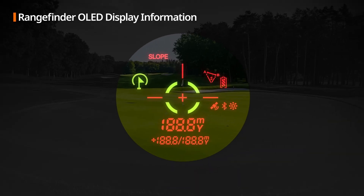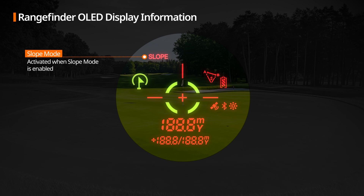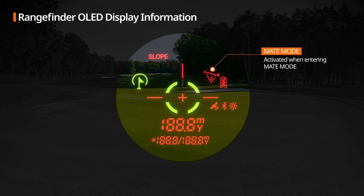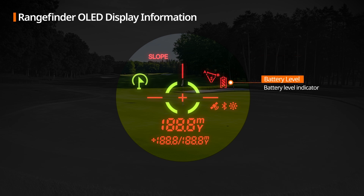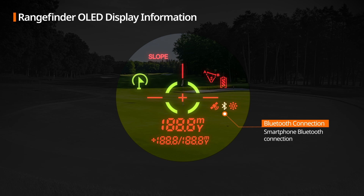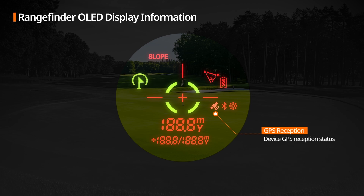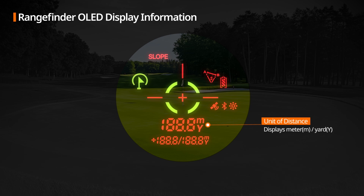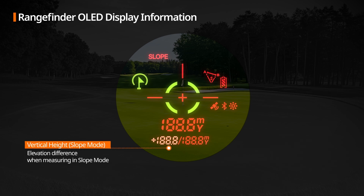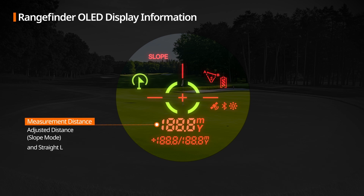Rangefinder OLED Display Information: Pin Catcher — activated when using Pin Catcher measurement. Slope Mode — activated when Slope Mode is enabled. Aiming Line — the line used to aim at the target during measurement. Matte Mode — activated when entering Matte Mode. Battery Indicator — displays remaining battery level. Brightness Adjustment icon. Bluetooth Pairing — displays Bluetooth connection status between the device and smartphone. GPS Reception — indicates GPS reception status. Measurement Unit — displays in meters or yards. Straight Line Distance, Vertical Height Difference, and Measurement Distance are shown in slope and non-slope modes.